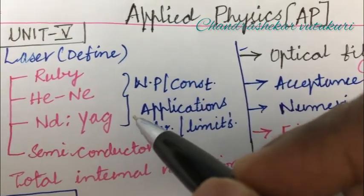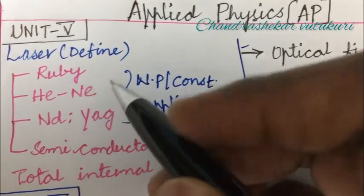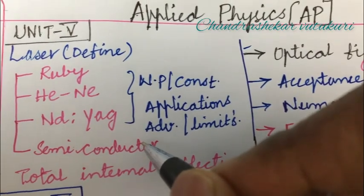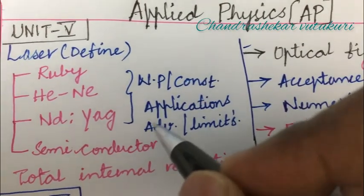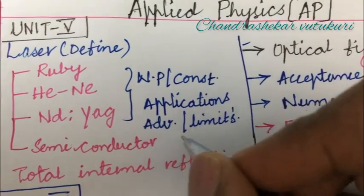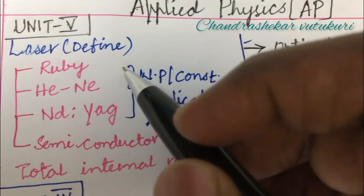The gun short question is related to laser: Ruby, Helium-Neon, Nd:YAG, or Semiconductor. Without skipping any part of these types of lasers, you are supposed to work out the working principle, construction, applications, advantages, and limitations. Define the term laser may also be a short question.